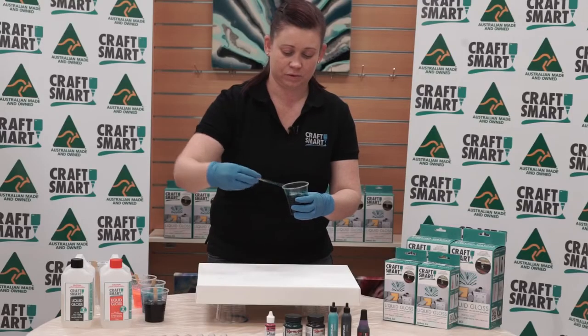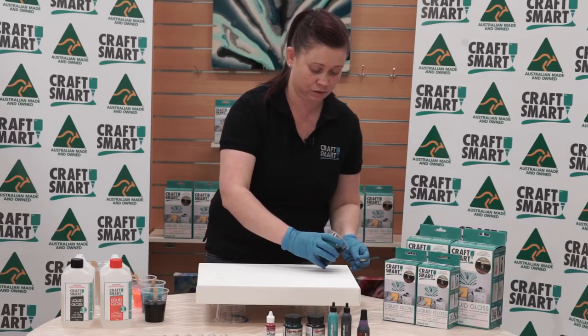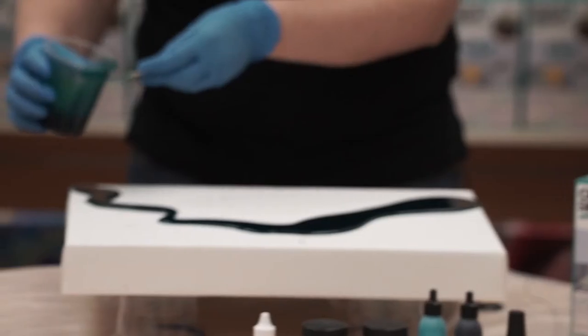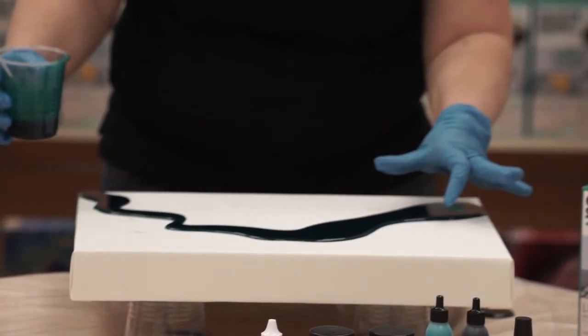We're going to use a flood pour today, which is straight from the cup and pouring straight onto the artboard. When you pour onto the artboard, you'll notice that the resin will start to flow out.